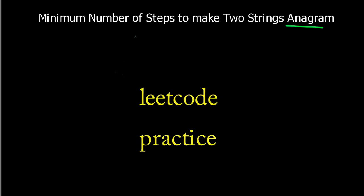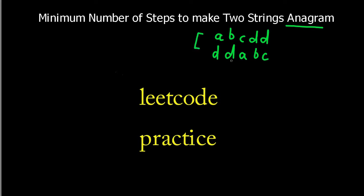Suppose you have two strings, and if those two strings have the same characters but ordering may be different — or can be the same — then these strings are known as anagrams. For example, take the string a, b, c, d, d and another string d, d, a, b, c. Both of these strings are anagrams because they have the same characters: two d's, one b, one a, one c. So therefore these two strings are anagrams.